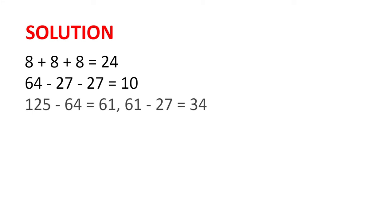So now we look at 125. 125 minus 64 is 61. So if we use two 64s, it's going to be too big. So then we look at using 27. 61 minus 27 is 34.